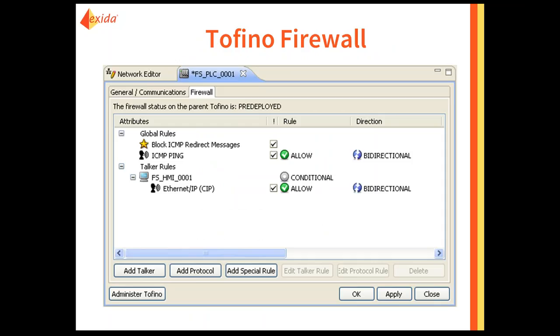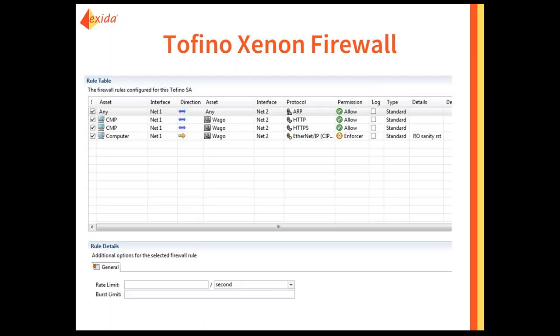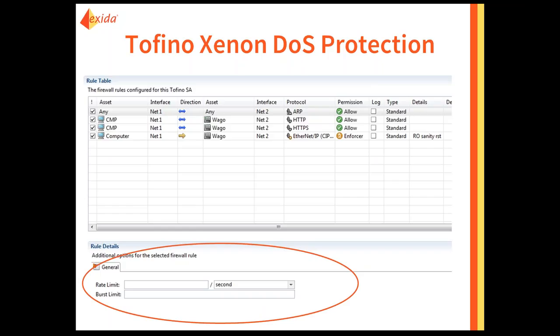The Tofino uses a graphic screen where you specify devices and protocols to pass through. It also has denial-of-service protection via a special rule, usually as a global setting, to limit the amount of traffic reaching your end devices. The Xenon firewall has a very clean, graphic-oriented screen with denial-of-service protection as well. The burst setting controls how many packets are allowed initially — for example, when the system first powers up and all devices are sending ARPs — after which the rate limit takes effect.